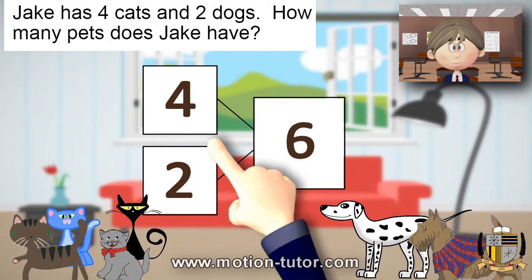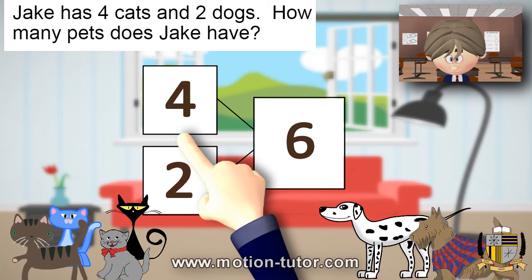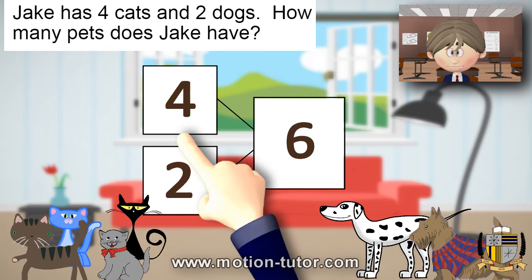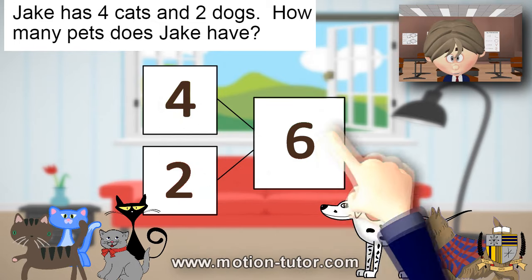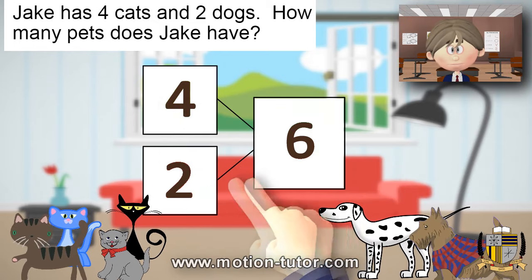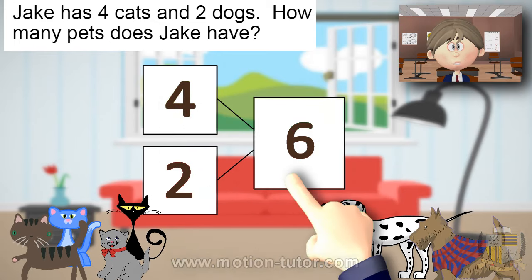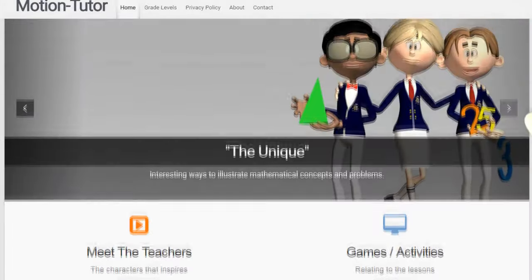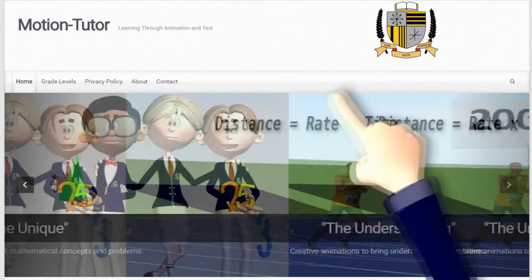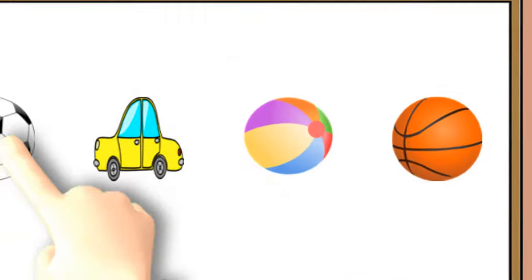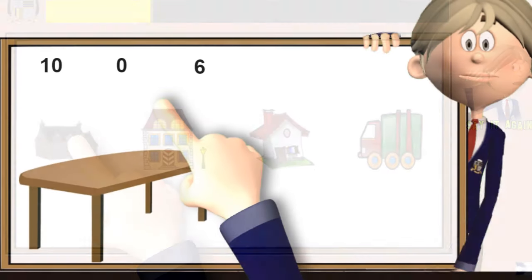So that's how you do it. We look at pictures and model them using number bonds. That's all for now. Be sure to check MotionTutor.com for other video lessons, activities, and games related to them. Bye.